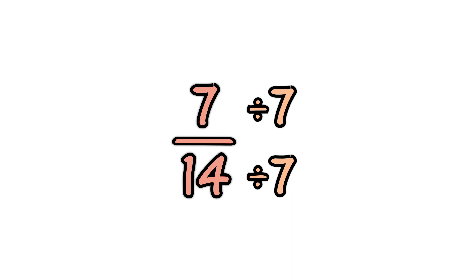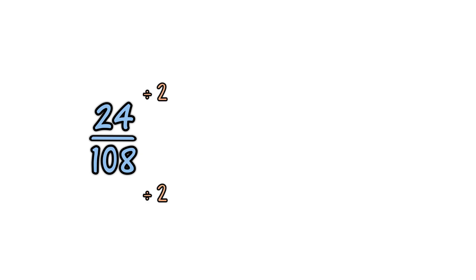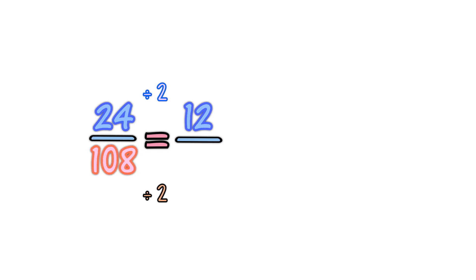Simplify the fraction 24 over 108. First, divide it by 2. 24 divided by 2 is 12, and 108 divided by 2 is 54.